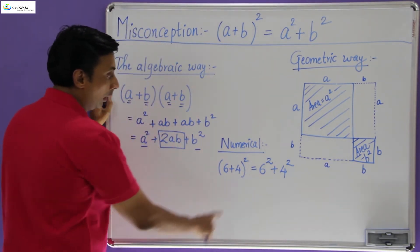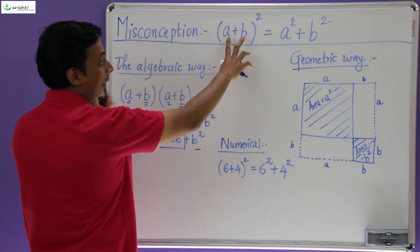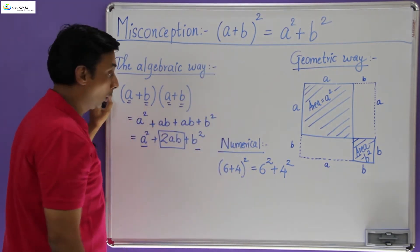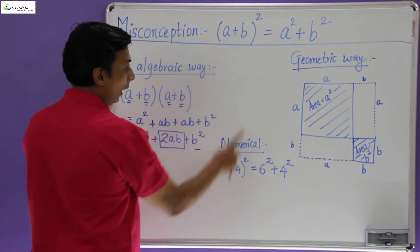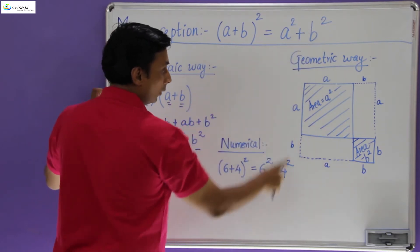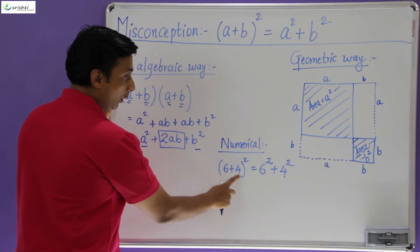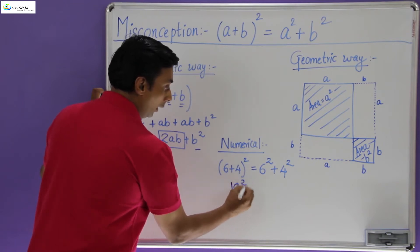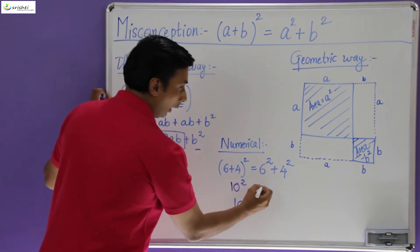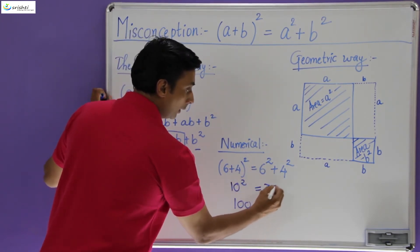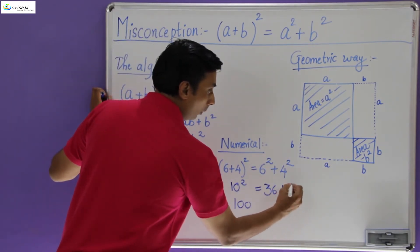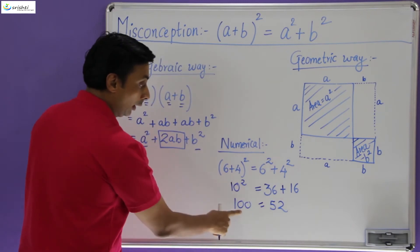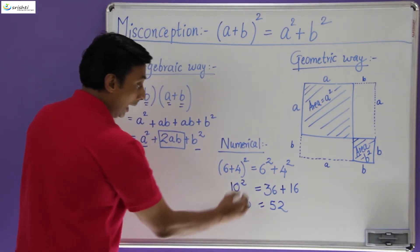Now let's take a look at the numerical method. If I were to agree to this misconception, I can simply substitute a and b with some random numbers and see if the result holds true. I've replaced a by 6 and b by 4. The left hand side: 6 + 4 = 10, and 10² = 100. The right hand side: 6² = 36, and 4² = 16, so 36 + 16 = 52. You will now notice that 100 is in no way equal to 52, which means something is really missing.